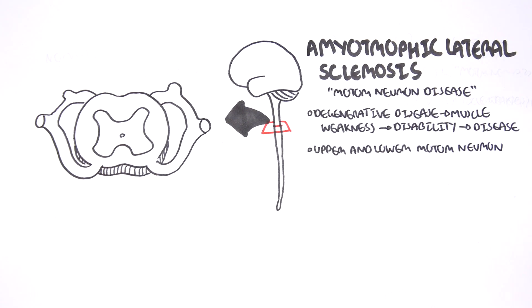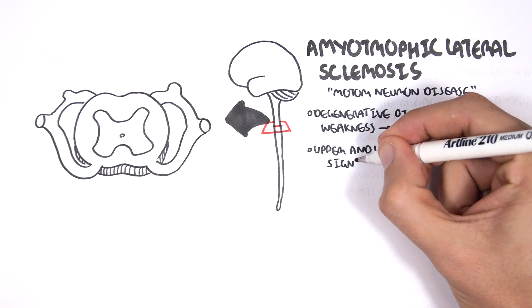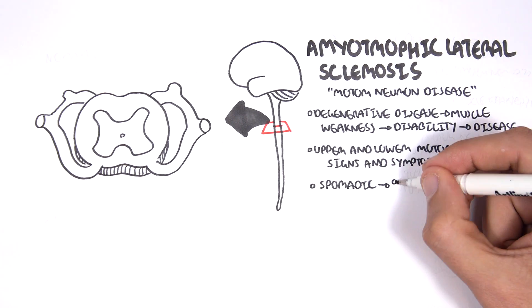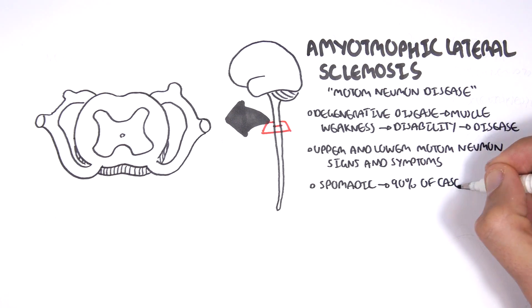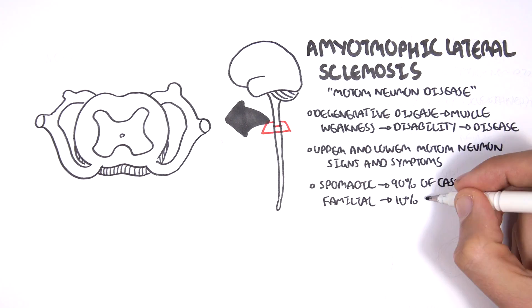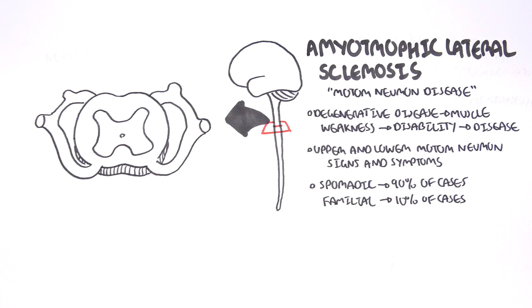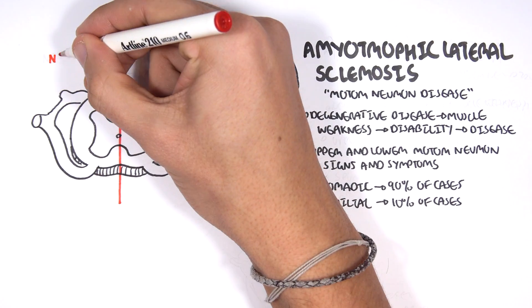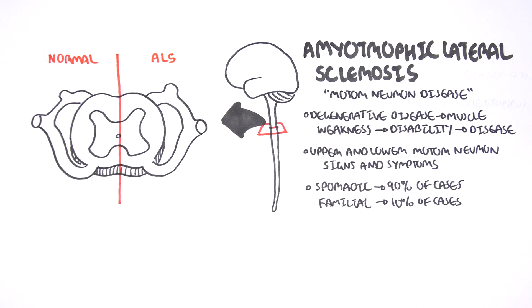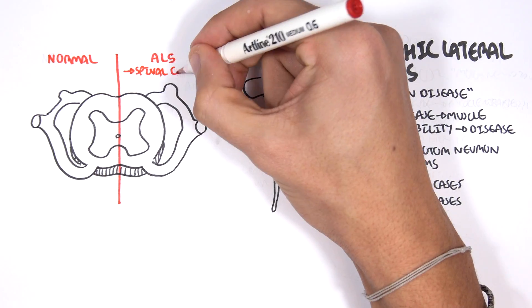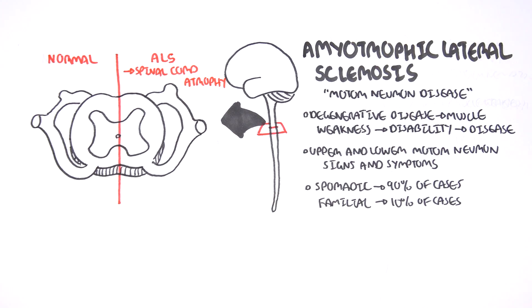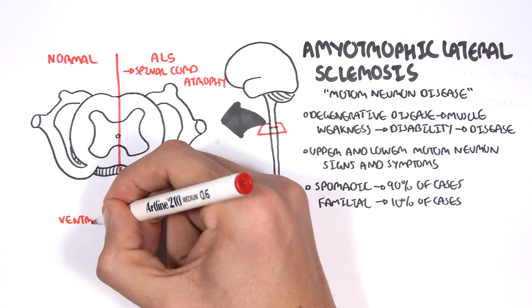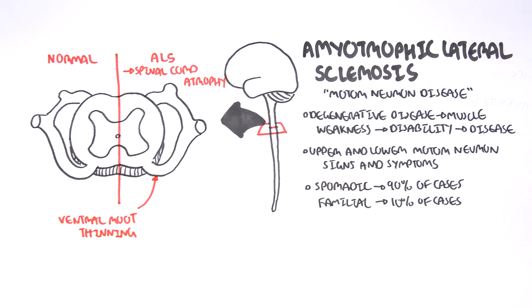Motor neuron disease causes upper and lower motor neuron signs and symptoms. It can be sporadic in 90% of cases or familial in 10% of cases. Comparing a normal spinal cord to a patient with motor neuron disease, we see ventral root thinning as well as spinal cord atrophy.